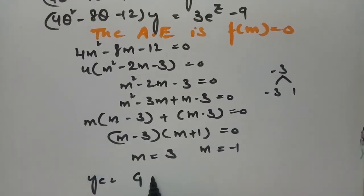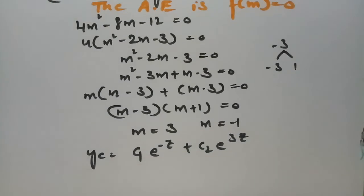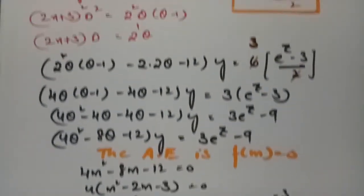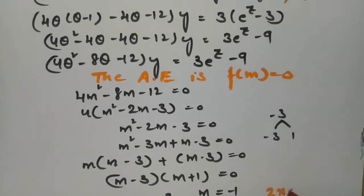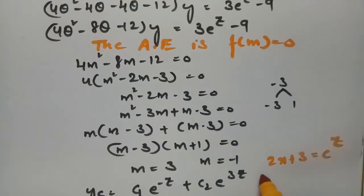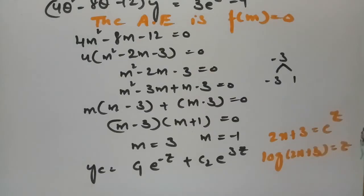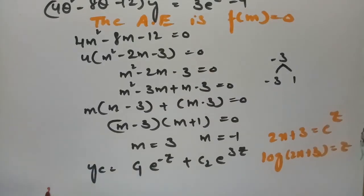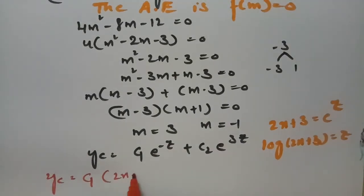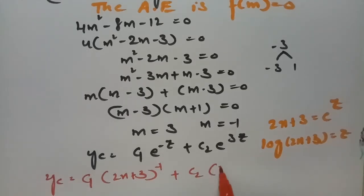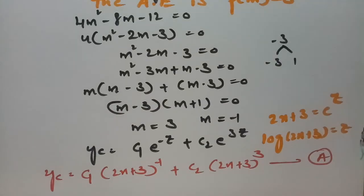Therefore y_c = c₁·e^(-z) + c₂·e^(3z). Back substitution: since 2x + 3 = e^z, e^(-z) = (2x + 3)^(-1) and e^(3z) = (2x + 3)³. So y_c = c₁·(2x + 3)^(-1) + c₂·(2x + 3)³. This is equation (a), the complementary factor.